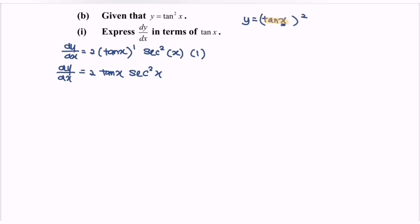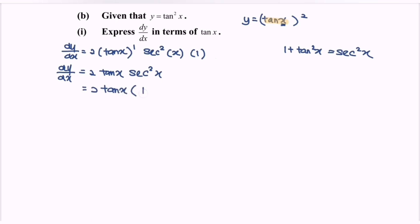The question requests us to express in terms of tangent x. Based on the basic trigonometric identity, 1 plus tangent squared x equals sec squared x. So substitute sec squared x, and we will have 2 multiplied with tangent x multiplied with 1 plus tangent squared x.